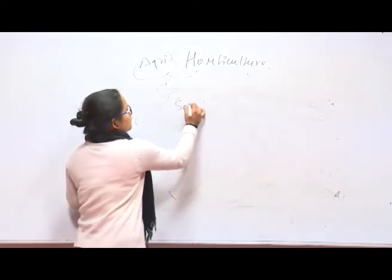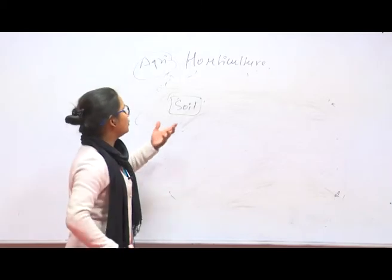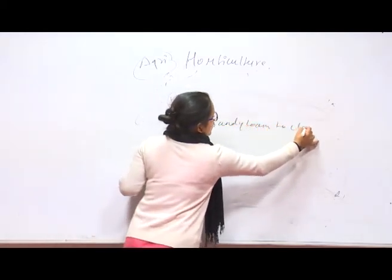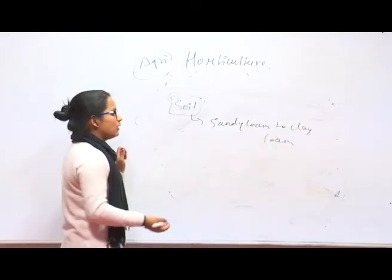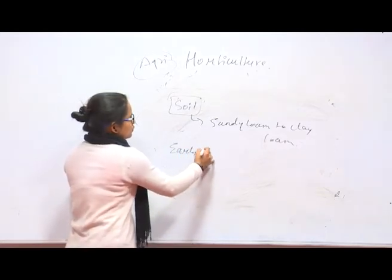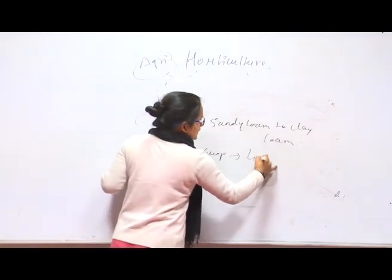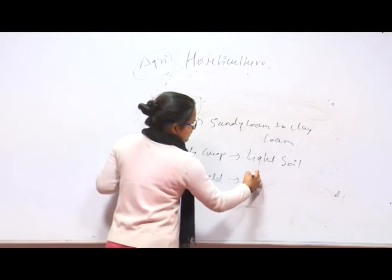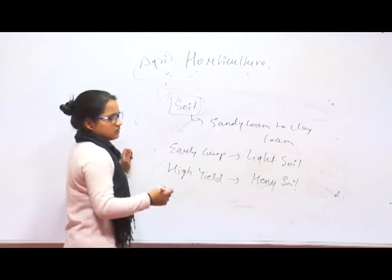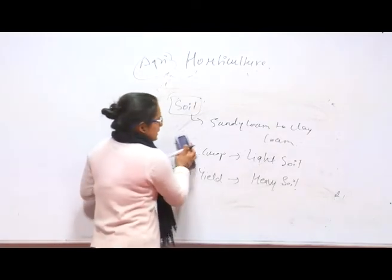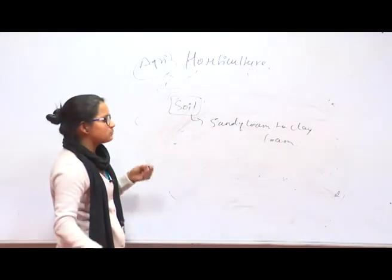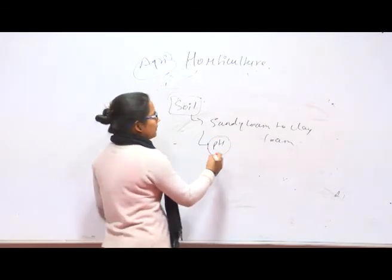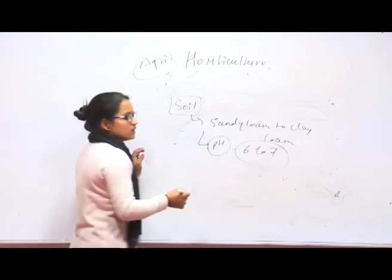Next, which type of soil is best for tomato? Tomato can grow in all types of soil, but sandy loam to clay loam soil is best for cultivation. If you want an early crop, go for light soil; if you want high yield, choose heavy soil. The pH should be 6 to 7, which is the best range for propagating tomato.